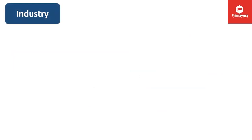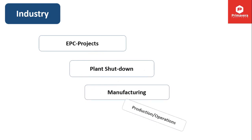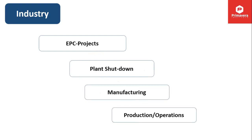Primavera is used in EPC projects, plant shutdown projects, manufacturing units, and production or operation units. In this course, we will focus specifically on plant shutdown, manufacturing, and production operations — we have a separate course for EPC projects on Primavera 6. This course is specifically designed for plant shutdown, manufacturing, and production operations.